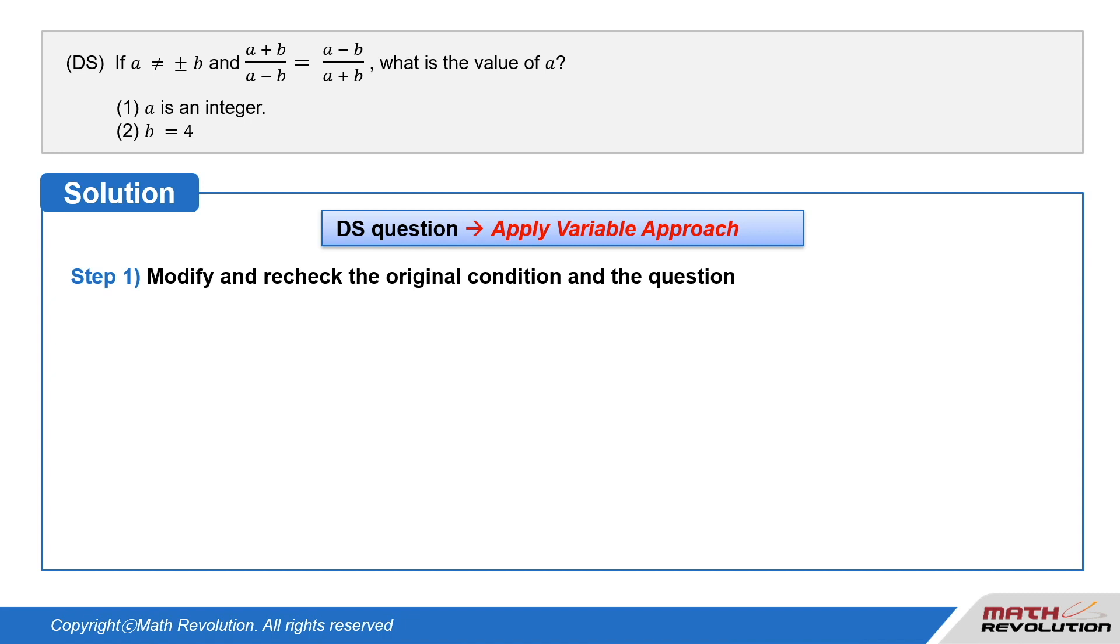This question shows how you can get b as the answer using the modification, which is the first step of the variable approach. This directly shows a type of question that appears frequently in recent exams.